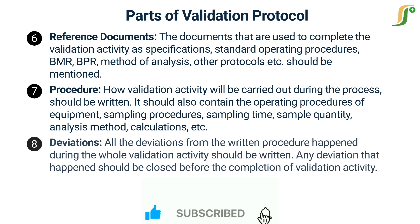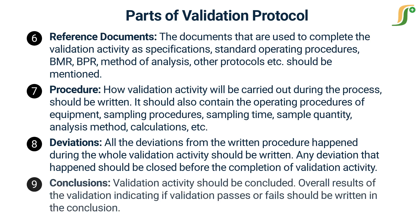Deviations: all the deviations from the written procedure that happened during the whole validation activity should be written. Any deviation that occurred should be closed before the completion of the validation activity. Conclusions: the validation activity should be concluded, and overall results indicating if validation passes or fails should be written in the conclusion.